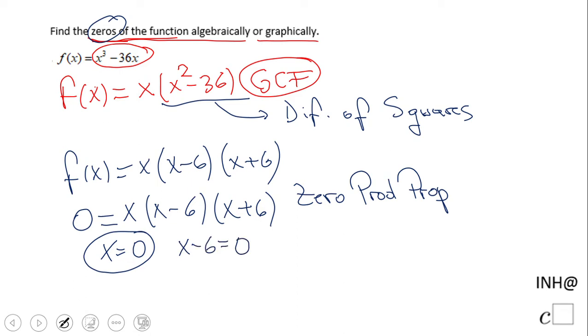equal to zero by the zero product property, so I get x equals six. The third one is x plus six equals zero, which gives us x equals negative six. These are the zeros of this function.